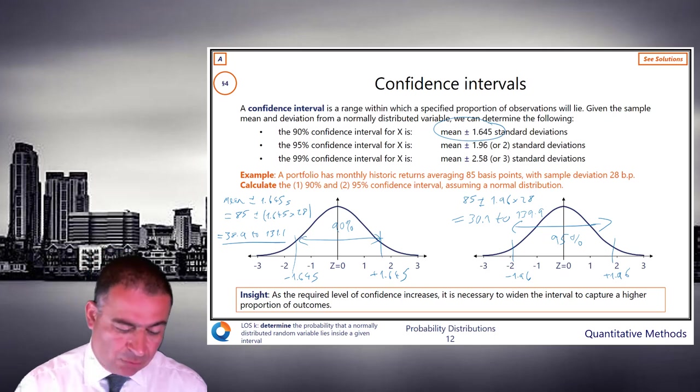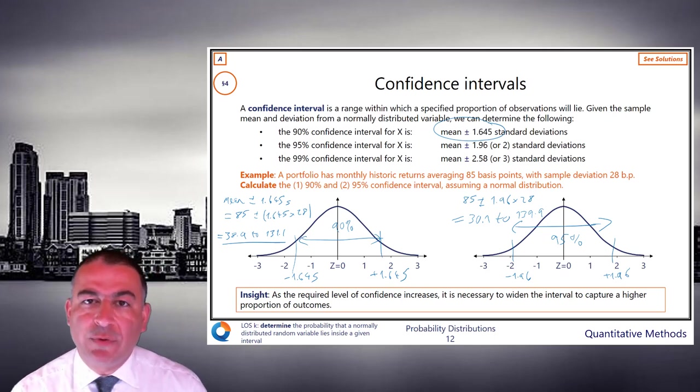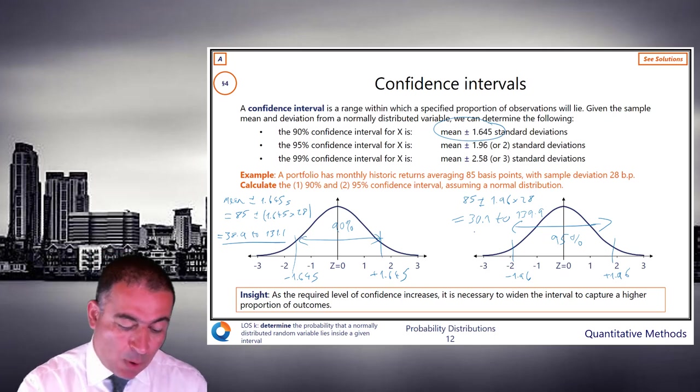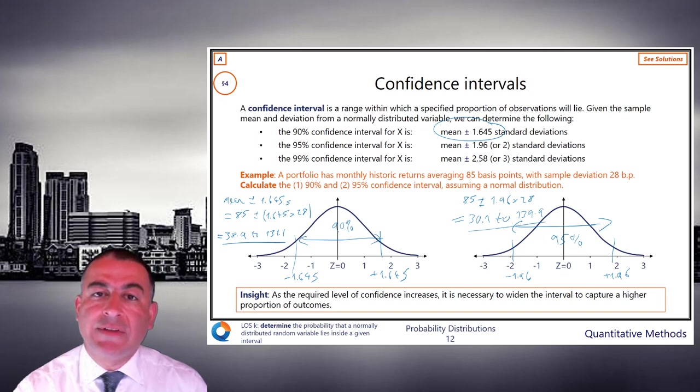If you did it rounded, it doesn't matter. So 30 to 140 is absolutely fine. In the exam, of course, you would look at the three answers, and you will find that one is very close to where you are. And that's how we do confidence intervals.